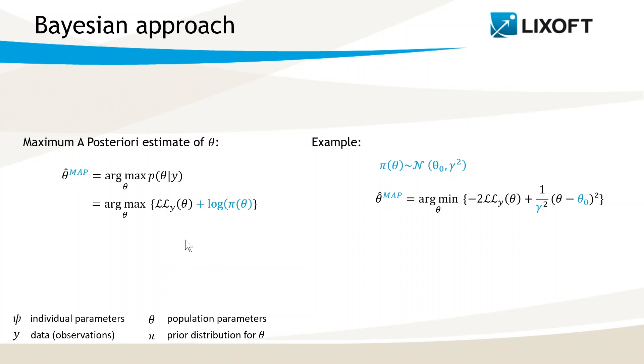As I have mentioned before, the weight given to the prior directly depends on the variance of the prior distribution. For instance, let's look at an example where θ is a scalar parameter and the prior is a normal distribution with mean θ0 and standard deviation γ.